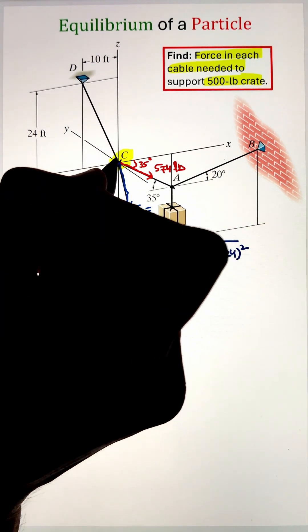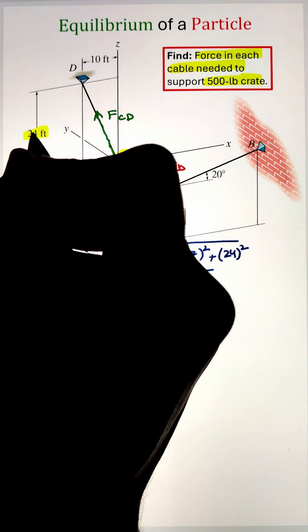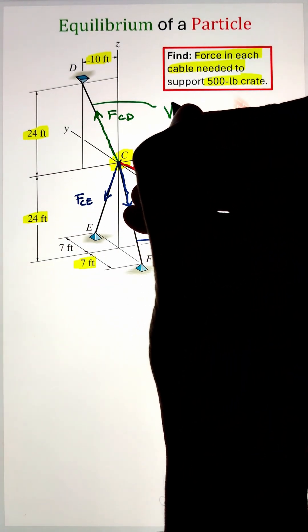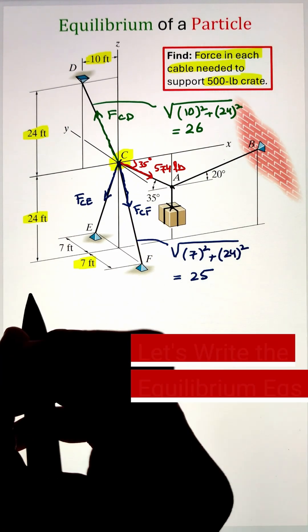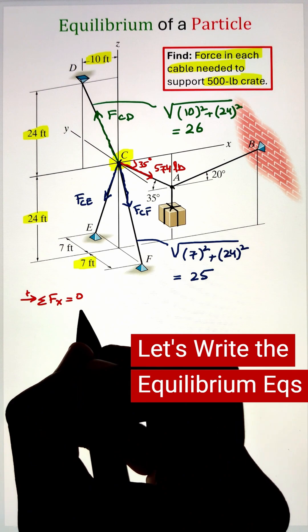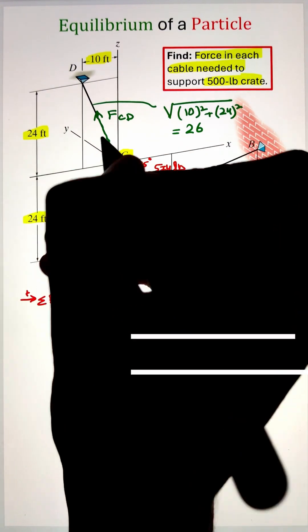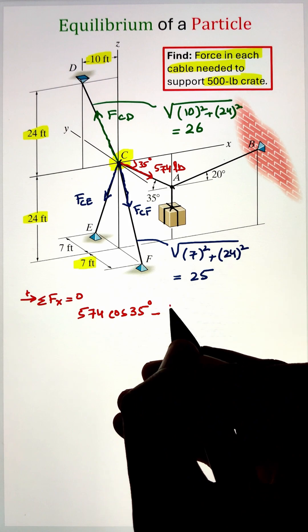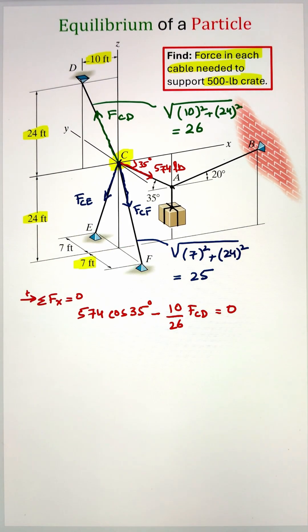Once we have all the dimensions, we can start applying our equilibrium condition, starting with summation of forces along the x-axis. So our 574-pound force, the cosine function of that will give us the component along the positive x-axis, whereas the FCD, if we multiply that with 10 over 26, will give us the component along the negative x-direction. Simplifying, we get the value of FCD.